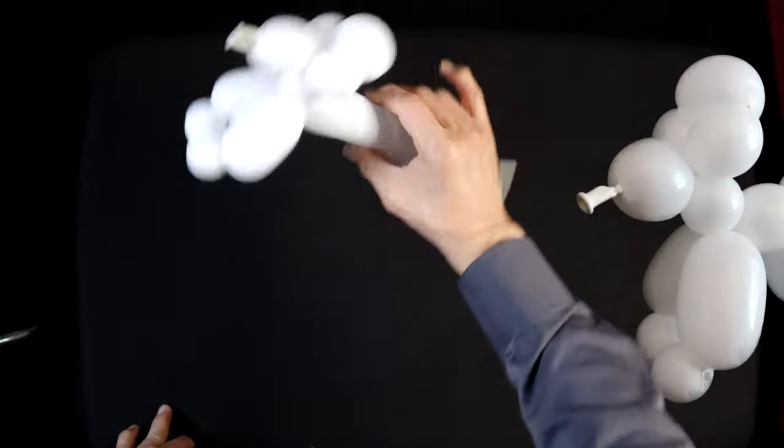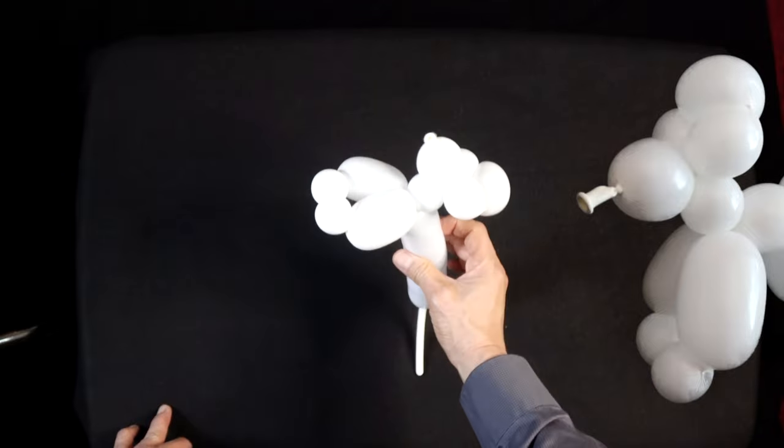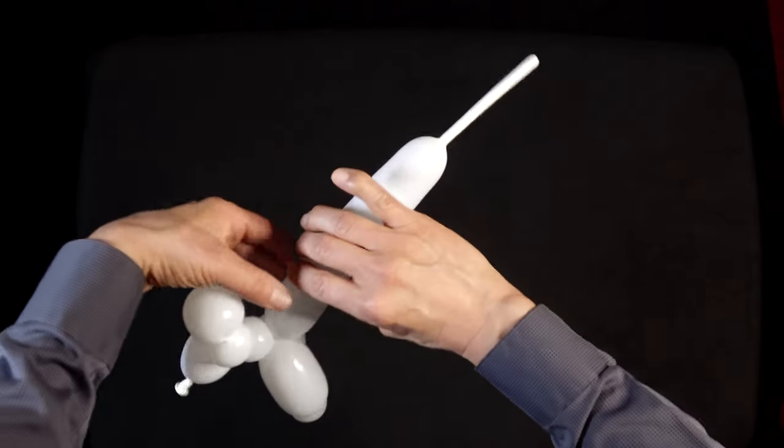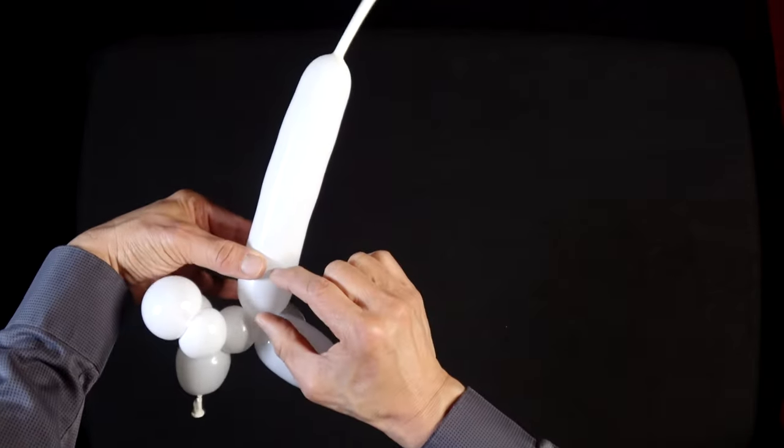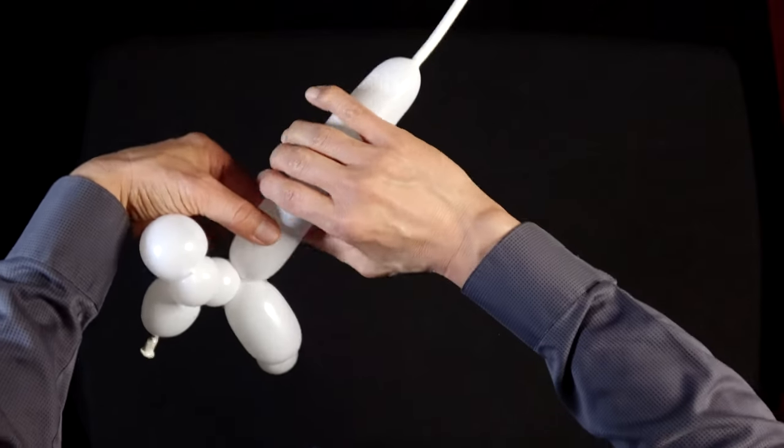There you have a poodle with its front legs. For the small body, we're just going to make a basic twist about an inch long.